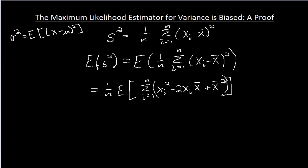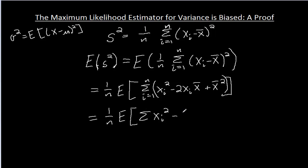I can think of that as summing one term at a time, so let me do that. It's 1 over n times the expectation — I'm just going to stop writing the subscripts and superscripts on the summation sign, but understand that I am summing from i equals 1 to n — minus 2 times the sum of xᵢx̄, plus the sum of x̄ squared.